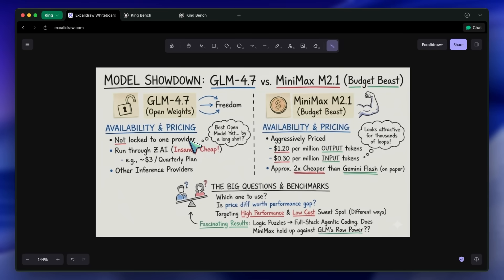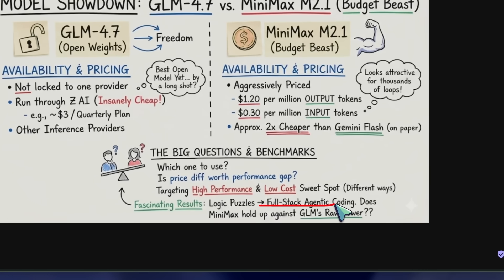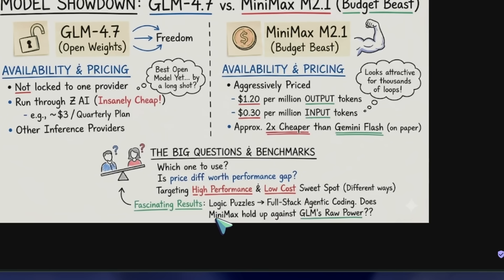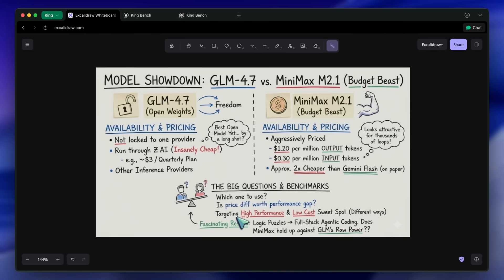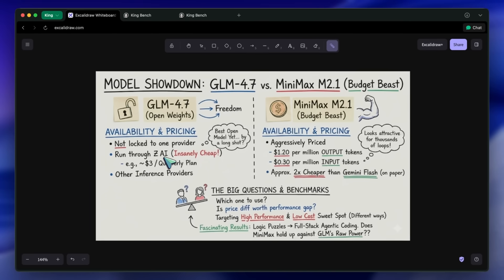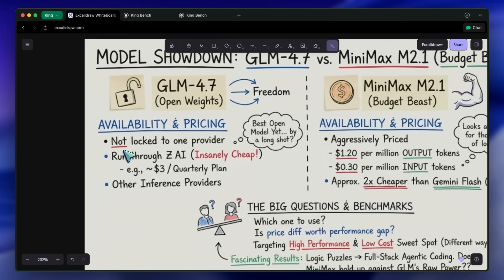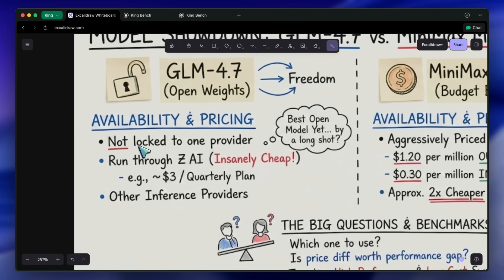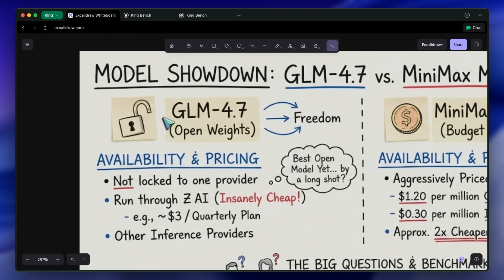I have been running them side by side on my benchmarks, throwing everything from basic logic puzzles to full-stack agentic coding tasks at them. And honestly, the results are kind of fascinating. First, let's talk about availability and the price tag, because this is usually the deciding factor for a lot of developers.